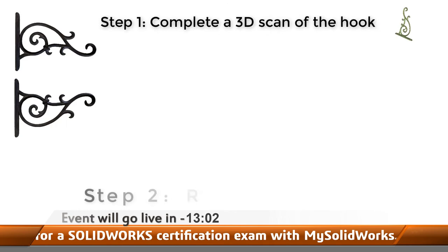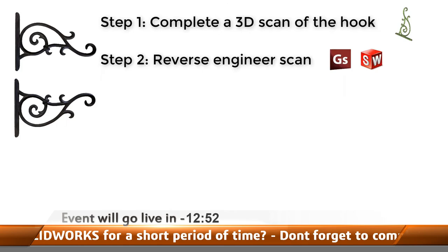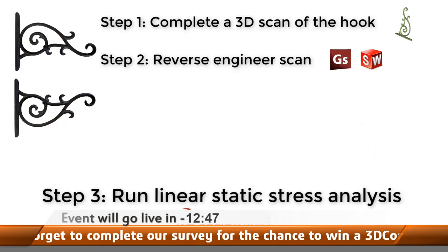Step 2: using this mesh file, we'll use the power of Geomagic for SOLIDWORKS and SOLIDWORKS mesh tools to generate a fully featured SOLIDWORKS model. Step 3: we'll run a linear static stress analysis on each orientation of the hook using consistent fixtures and loading.